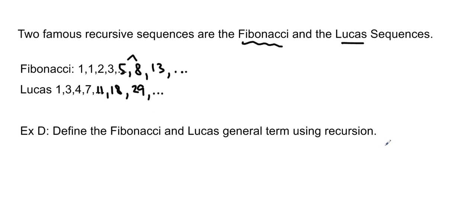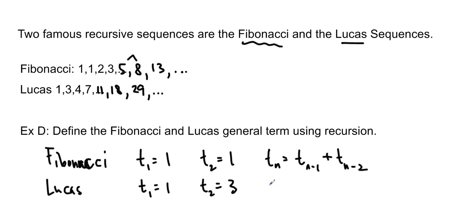So for Fibonacci, we actually need to define the first two terms before we can start the sequence. T sub 1 is equal to 1, and T sub 2 is equal to 1. And to find every other term after that, we're going to add the previous two terms together. So the term right before n is T sub n minus 1, and the one right before that is T sub n minus 2. Lucas is almost exactly the same, but term 2 is different. So we write term 1 is 1, term 2 is 3, and all successive terms are going to be the two terms before it added together. And that is all you need to do.